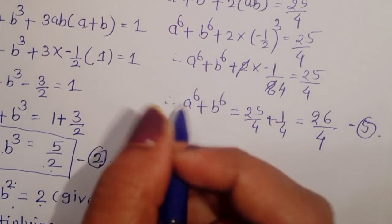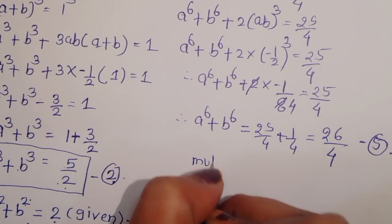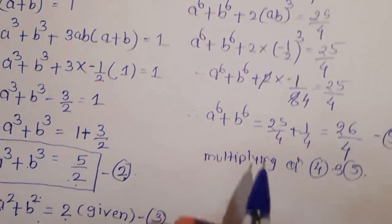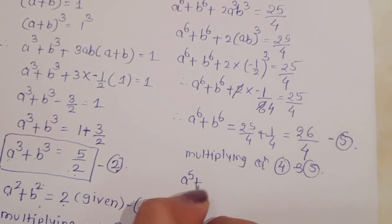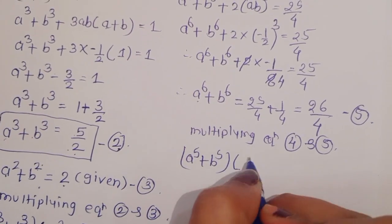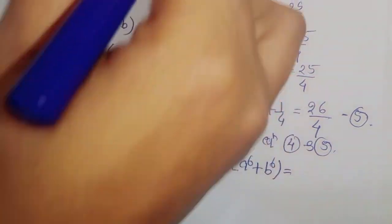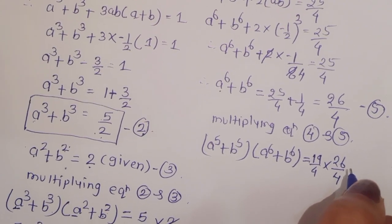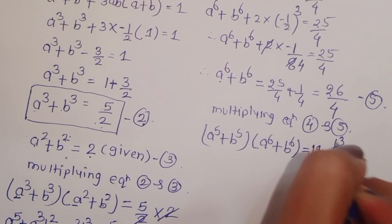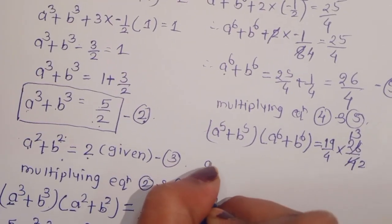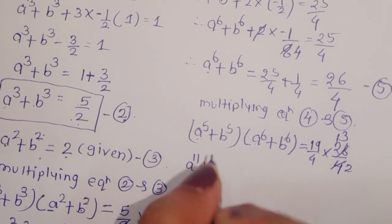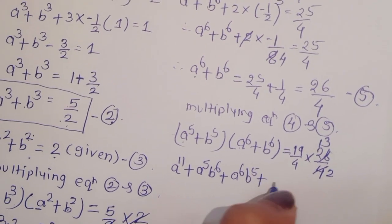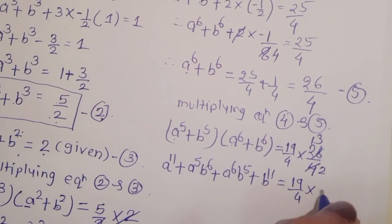Now multiplying equation 4 and equation 5: a power 5 plus b power 5 into a power 6 plus b power 6 equals 19 upon 4 into 26 upon 4, which simplifies to 19 upon 4 into 13 upon 2. Expanding: a power 11 plus a power 5 b power 6 plus b power 5 a power 6 plus b power 11 equals 19 upon 4 into 13 upon 2.